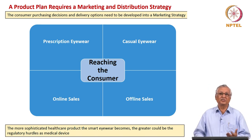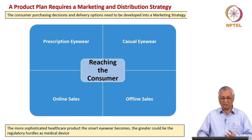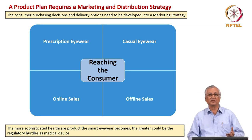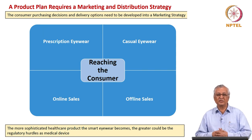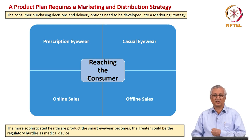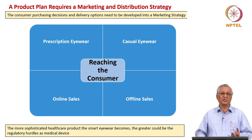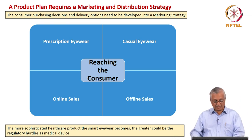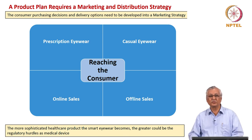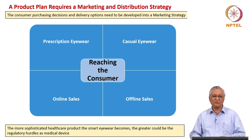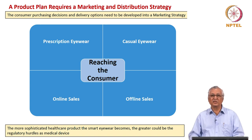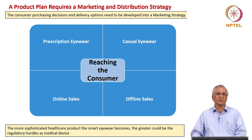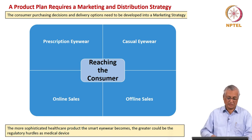When you look at established optical marketers, you can see they are offline companies. On the other hand, Lenskart is a very strongly successful online sales platform. The more sophisticated the healthcare product the smart eyewear becomes, the greater could be the regulatory hurdles as a medical device — that is also important. On one hand smart glass will occupy more spaces than ever imagined by a spectacle, but at the same time when it tries to accomplish more in terms of technology, it may be treated as a medical device and therefore face additional regulatory hurdles. All of these activities need to be understood and a proper business plan developed.